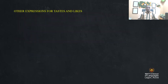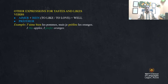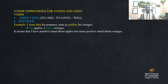Other expressions for taste and likes. The verb 'aimer bien' means to like quite well, and 'préférer' means to prefer. For example, 'j'aime bien les pommes, mais je préfère les oranges' — I like apples, but I prefer oranges. It means I have a positive feeling about apples but a more positive one about oranges.